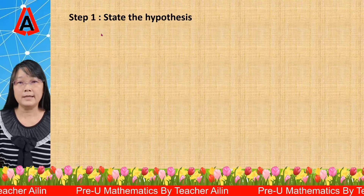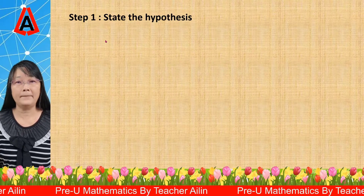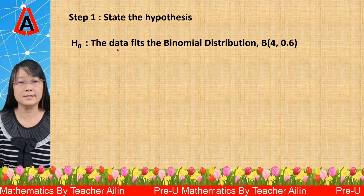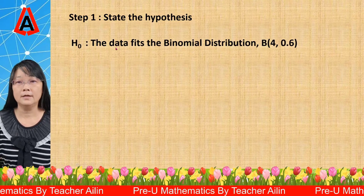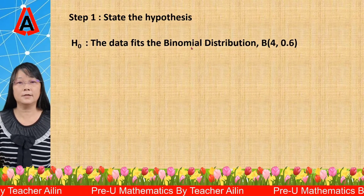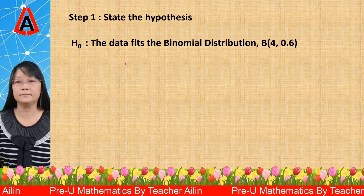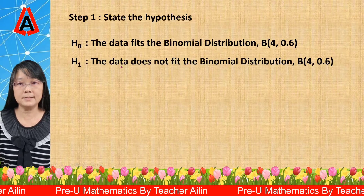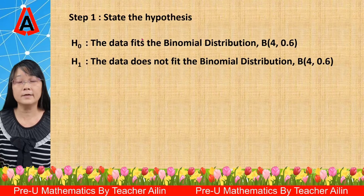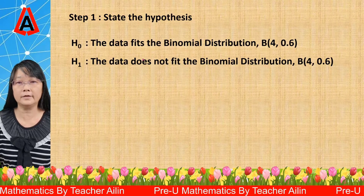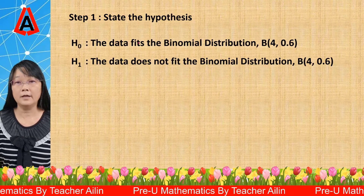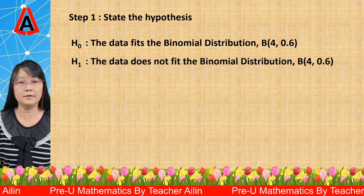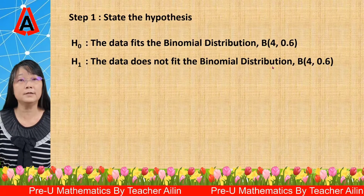First, state the hypothesis. For the null hypothesis, that is the statement that the data fits the binomial distribution. For the alternative hypothesis, that is the negative statement compared with the null hypothesis — the data does not fit the binomial distribution.